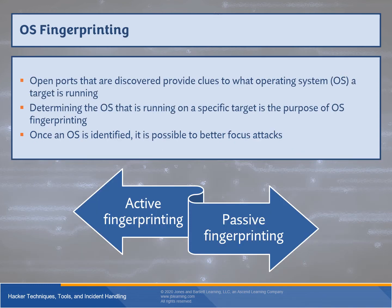Operating system fingerprinting relies on unique characteristics that each OS exhibits during normal operation. All operating systems are different in terms of construction and operation — even ones forked from one another. Their responses can provide clues for a well-educated guess about the system in place. We use active and passive fingerprinting to either probe a system to generate a response, or listen for system communications for details — sending crafted information into ports discovered as open during the scan.